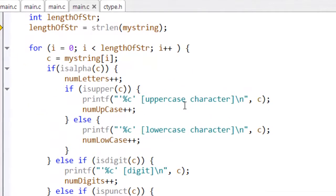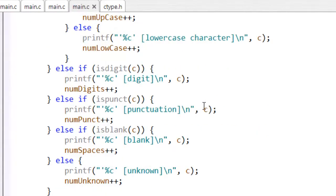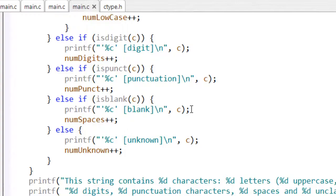And all it does is, it has a for loop and it goes through the string one character at a time, tests if it's an alphabetic character. If so, it then goes on to test, is it an uppercase or a lowercase character? Is it a digit? Does it count as some sort of punctuation? Is it a blank? And finally, is it unknown? And then it displays the results.